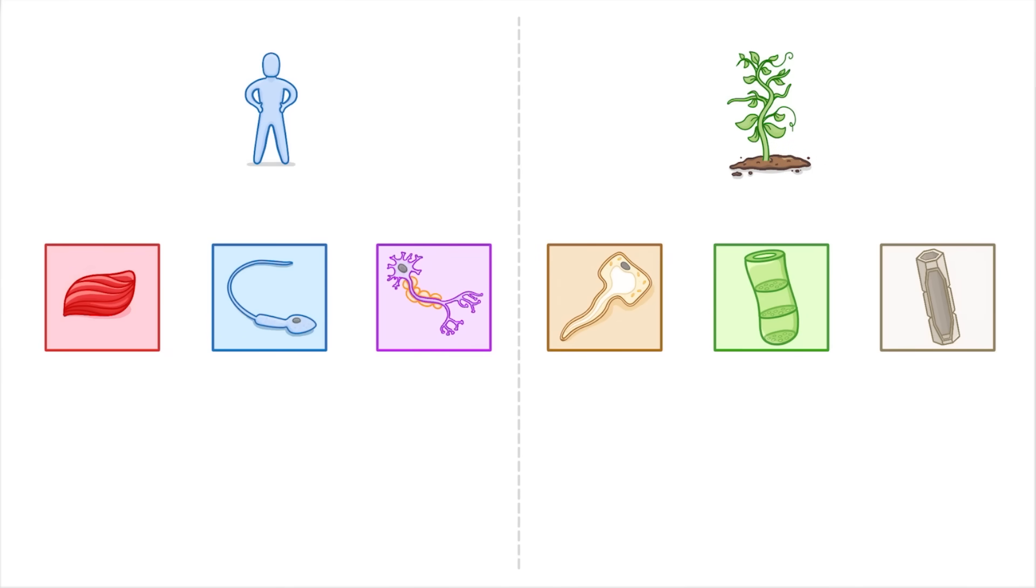We call these different types of cells specialized cells, and in the case of animals, examples include sperm cells, muscle cells, nerve cells, and many more. In fact, there are probably around 200 types of specialized cells in humans.